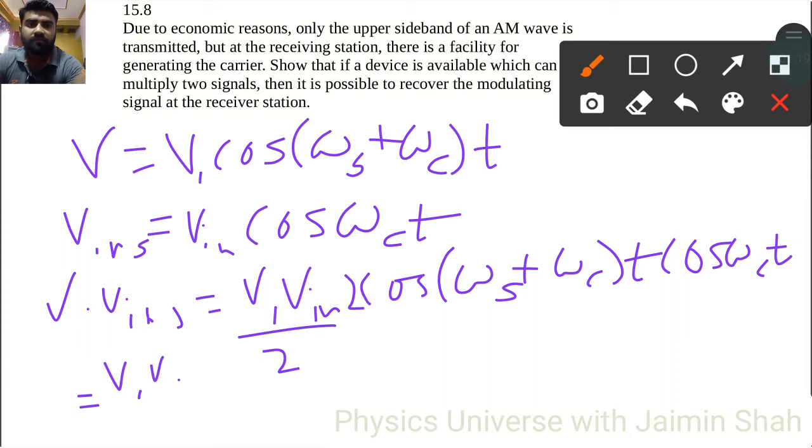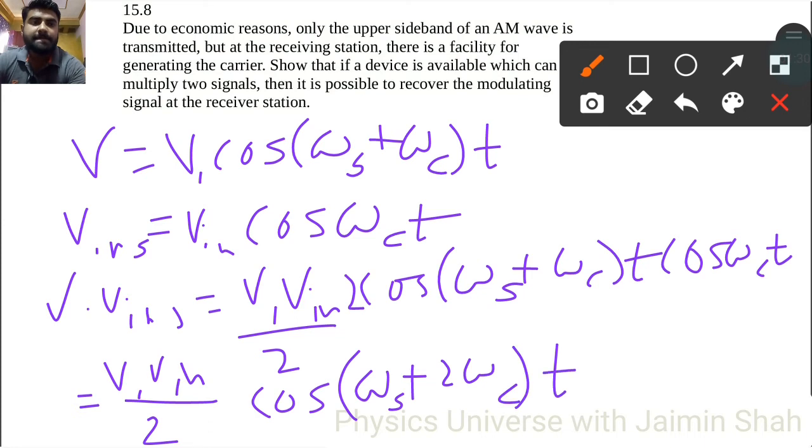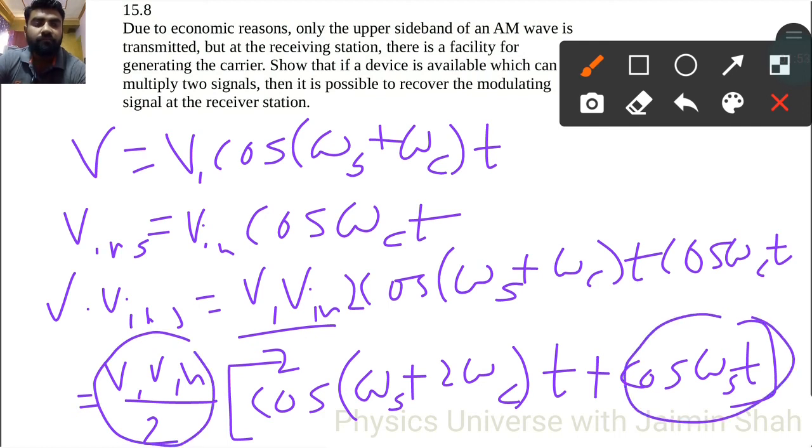So omega s plus 2 omega c into t, and here plus cos subtraction, so that is the omega s t. So here see, our frequency, our modulating frequency—that is this. And this multiplication of these two is our modulating frequency here.